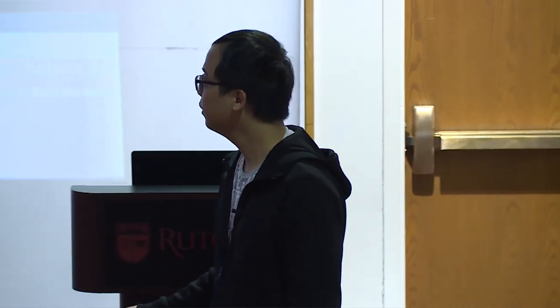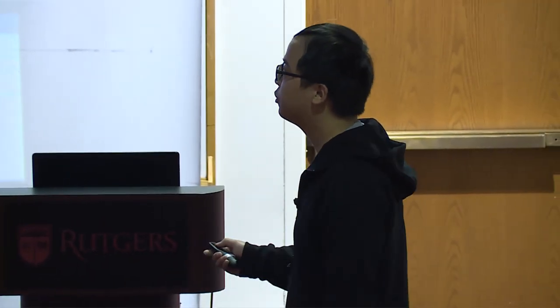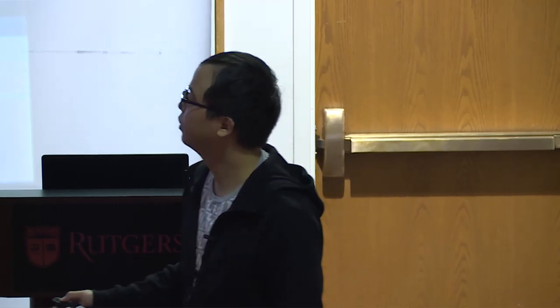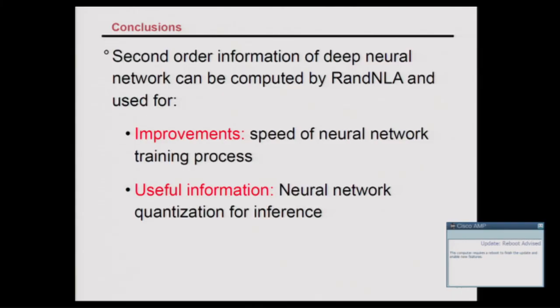In conclusion, second-order information can be computed from numerical linear algebra — specifically a randomized version — and it is very useful for improving neural network training speed and providing useful information for neural network quantization, enabling faster inference and deployment on mobile devices.